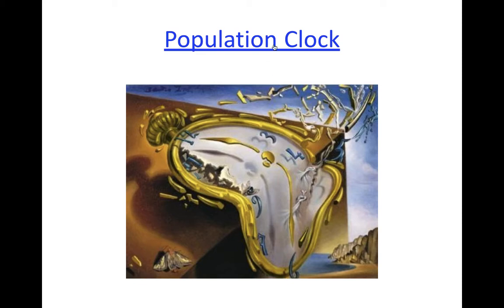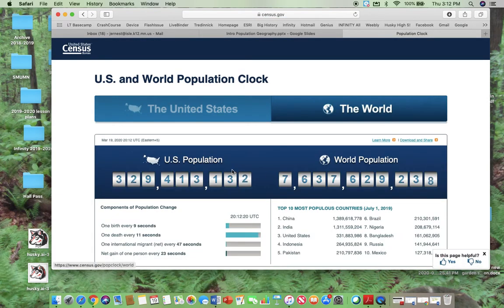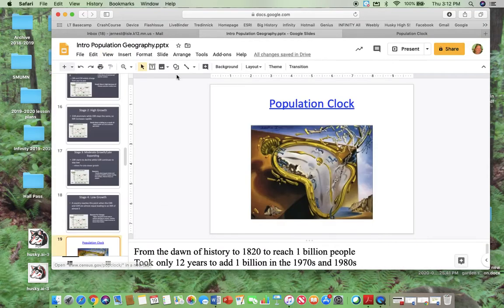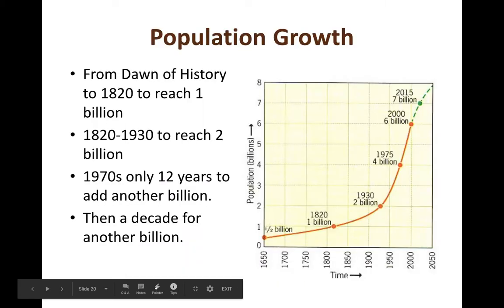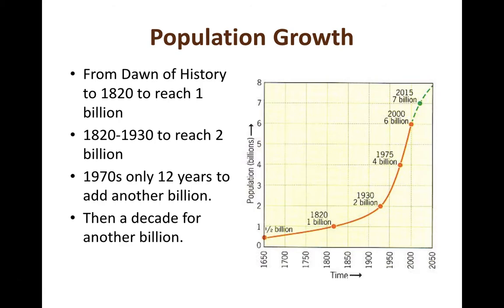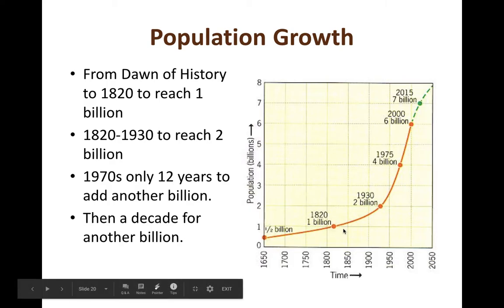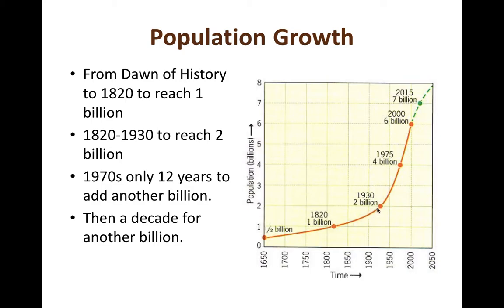The population clock shows world and U.S. population in real time — the U.S. is at about 329 million and the world is at about 7 billion, and both are still growing. Looking at population growth from the dawn of history to about 1820, it didn't grow very fast. From 1820 to 1930 it reached about 2 billion, by the 1970s about 4 billion, and then roughly a billion more each decade, reaching an estimated 7 billion around 2015.